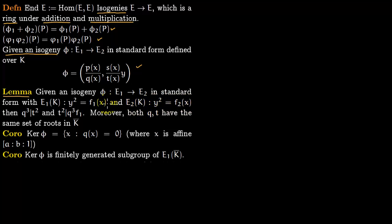The first lemma we want to discuss: given an isogeny from elliptic curve E1 to elliptic curve E2 in standard form, where E1 is Y squared equals F1(X) and E2 is Y squared equals F2(X), then Q cubed divides T squared, and T squared divides Q cubed times F1. Moreover — and this is important — Q and T have the same set of roots in the algebraic closure of K.